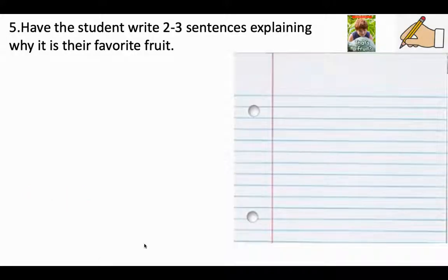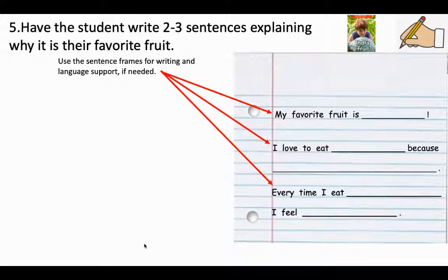Number five. Have the student write two to three sentences explaining why it is their favorite fruit. These are sentence stems that you can use to help your child in their writing. The first one says, my favorite fruit is.